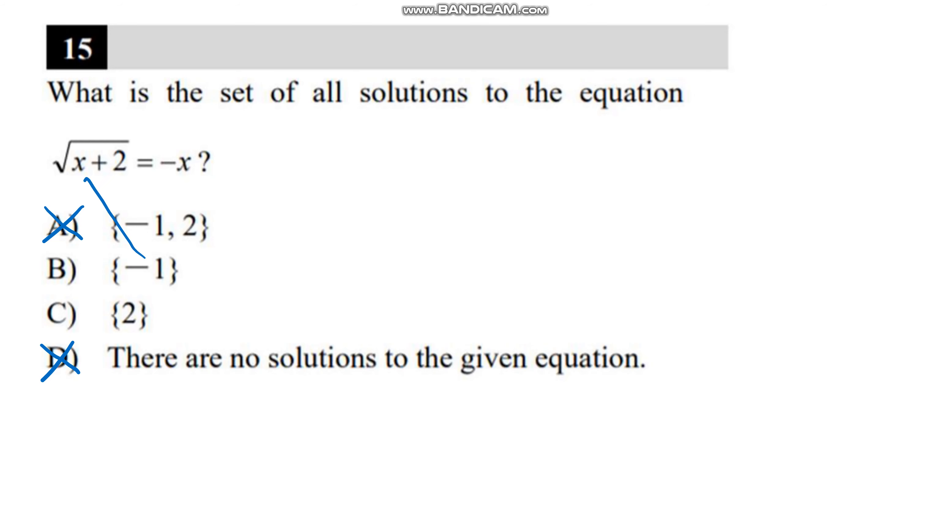So then we plug in negative 1, and that would be the square root of 1 equals negative negative 1, which would be 1 equals 1. That checks, and so the answer must be B. And just to demonstrate that 2 wouldn't work, that would be square root of 4 equals negative 2. 2 does not equal negative 2, so C is out as well.